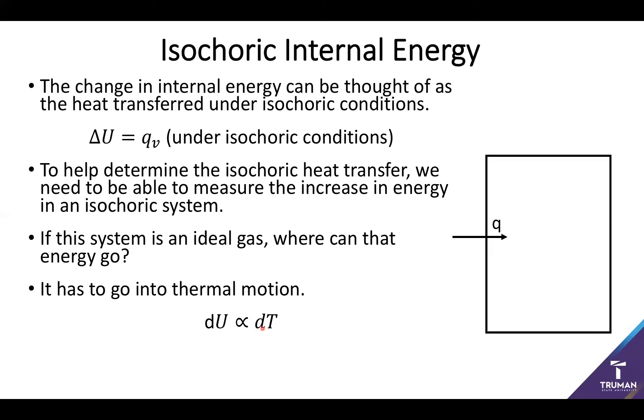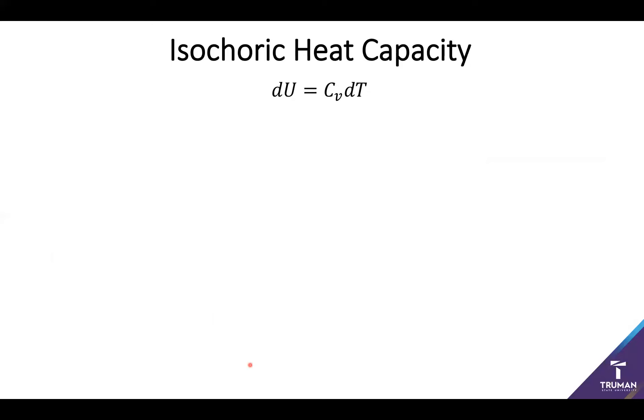And for that, we have our good old friend that it turns out that most of that kinetic energy can be well represented by temperature, because we've already seen a certain proportionality between our internal energy and the temperature or kinetic energy of the system. So because we have a certain proportionality between these terms, we end up giving that a constant, and we call this our isochoric heat capacity.